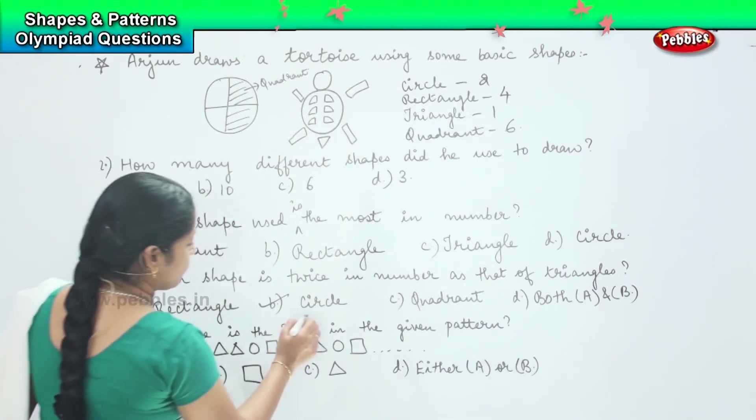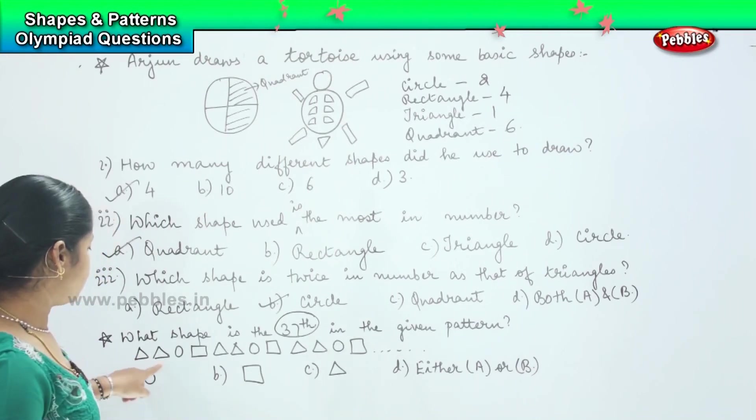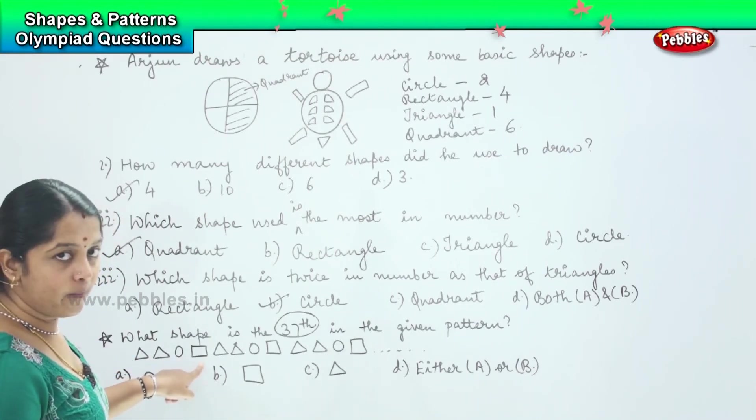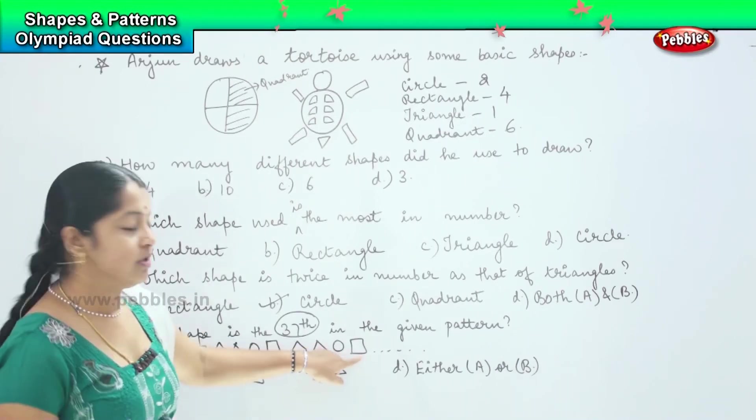So we need to identify what shape will come in the thirty-seventh position. So one, two, three, four, five, six, seven, eight, nine, ten, eleven, twelve.